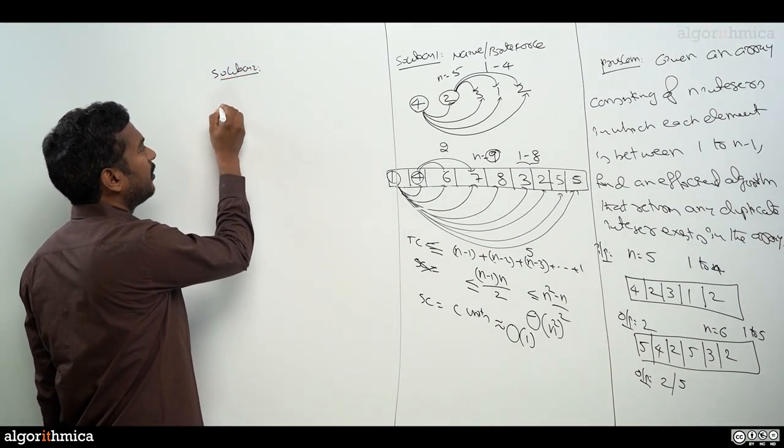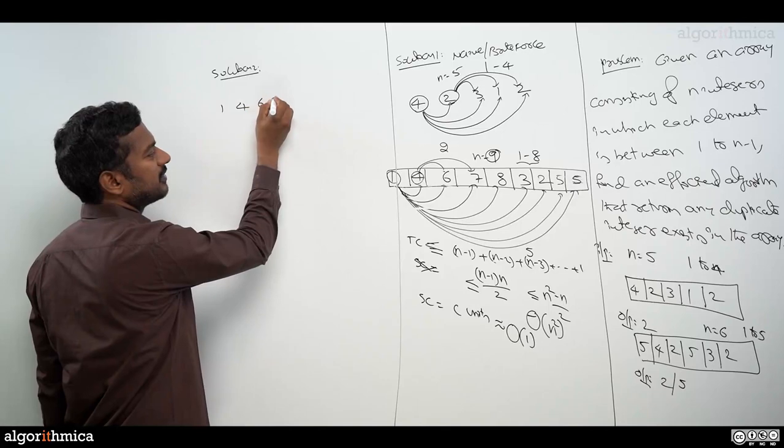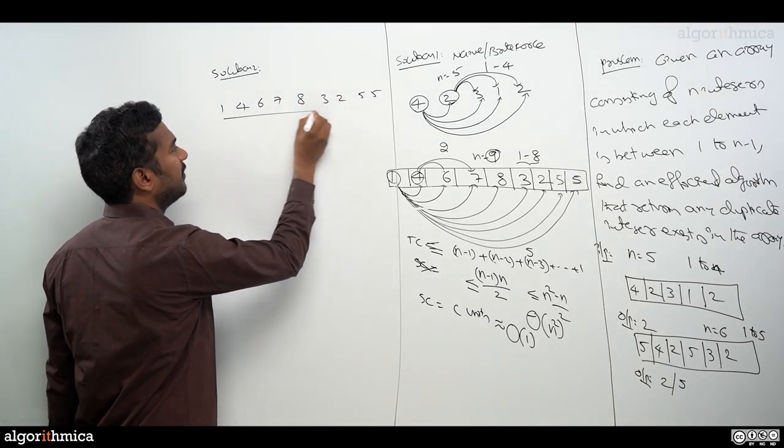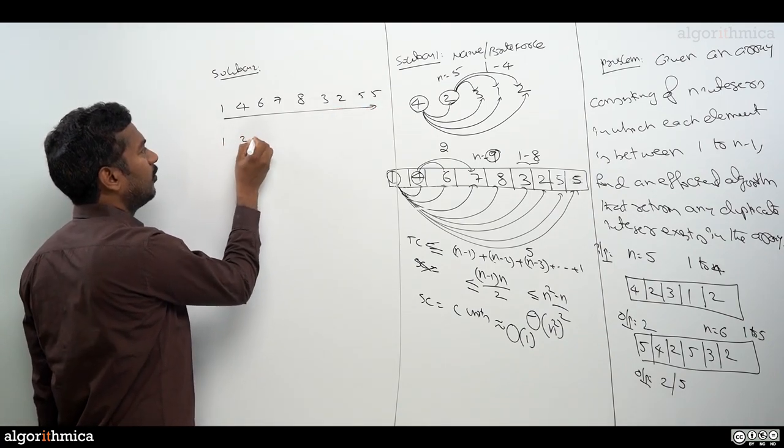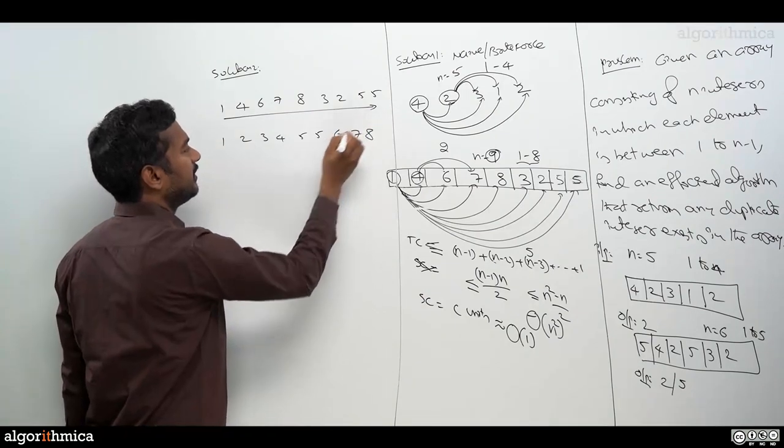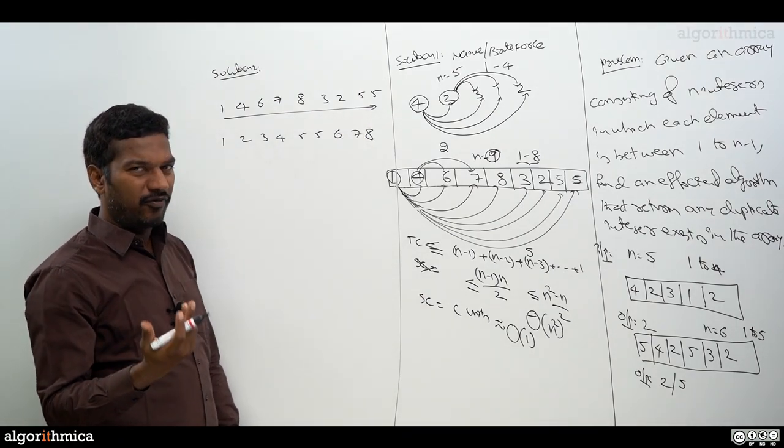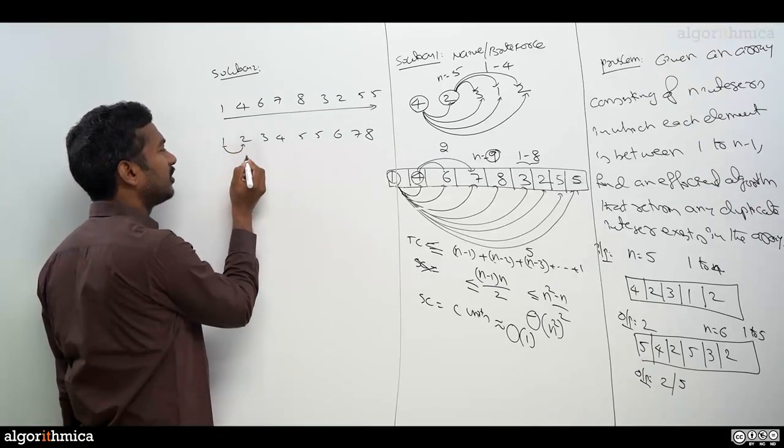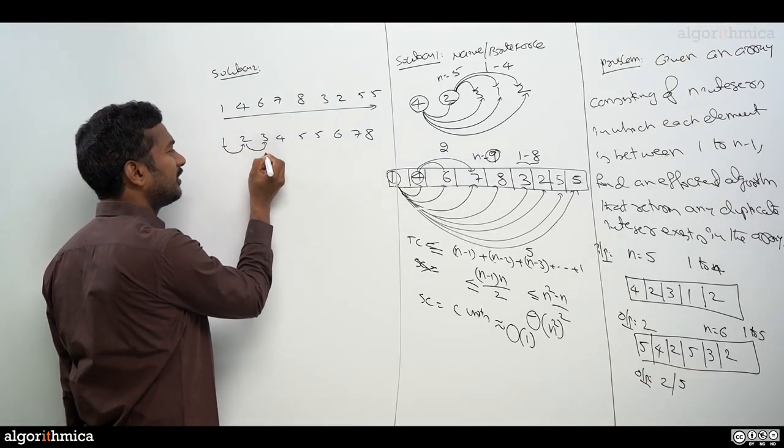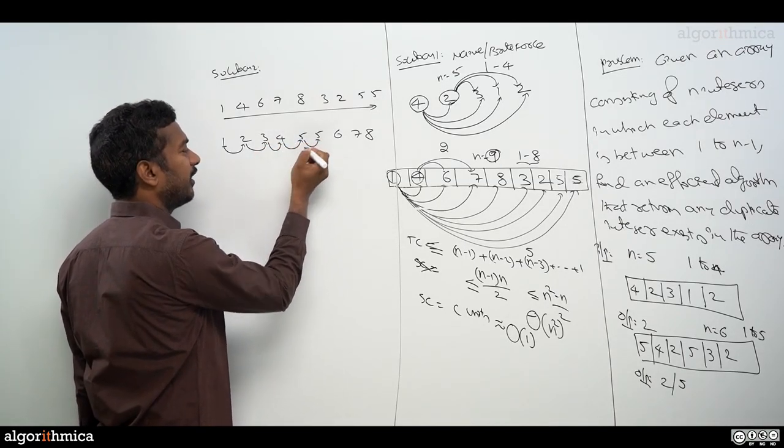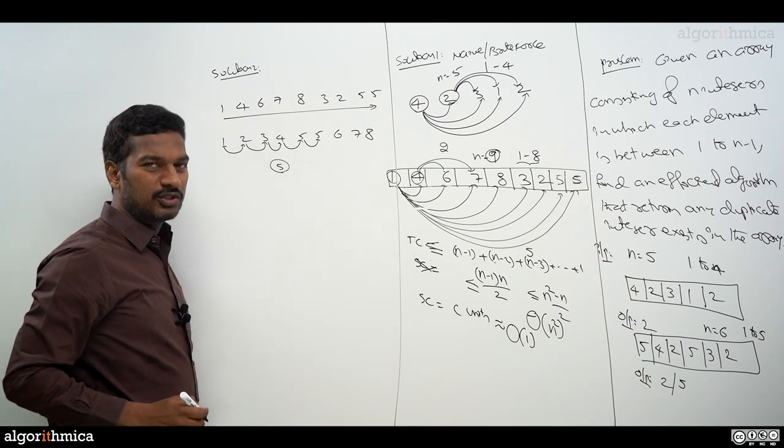Let me take the input: 1, 4, 6, 7, 8, 3, 2, 5, 5. When I sort this, I get 1, 2, 3, 4, 5, 5, 6, 7, 8. Now to find a duplicate, I just compare adjacent elements. I compare 1 with 2 - not there, 2 with 3 - not there, 3 with 4 - no, 4 with 5 - no, 5 with 5 - we got a match. We found 5 as the duplication.